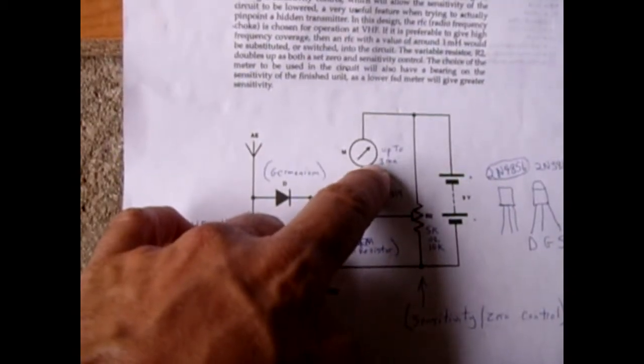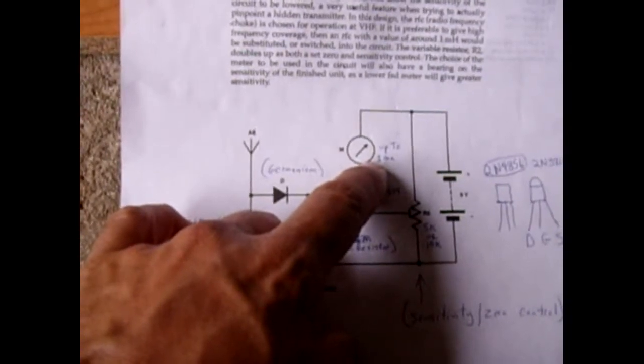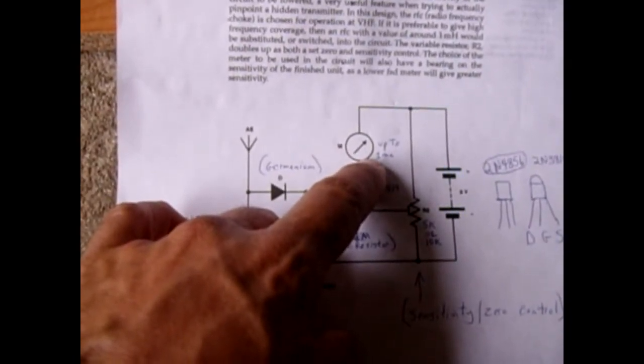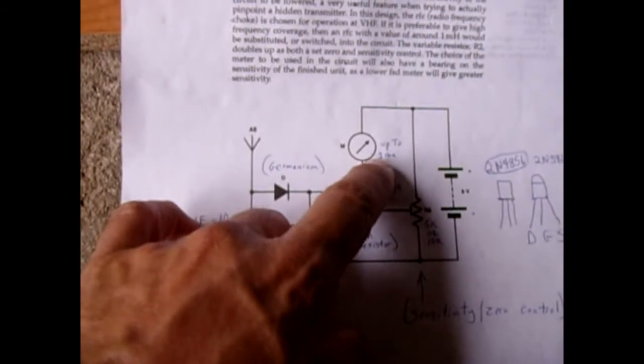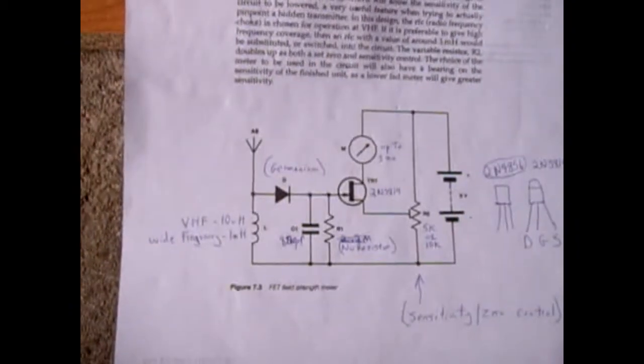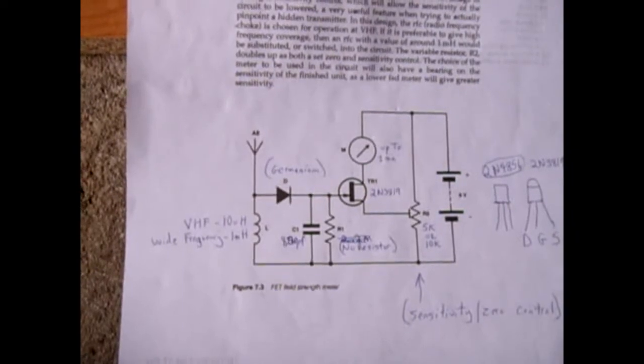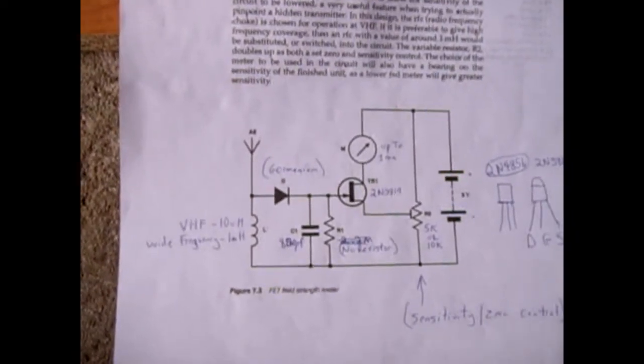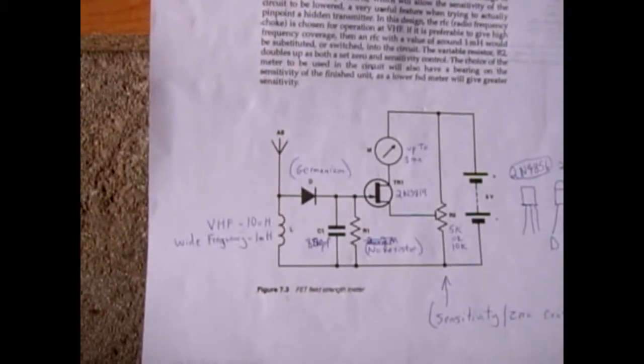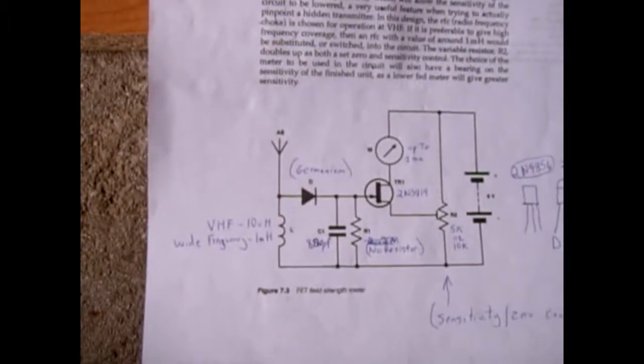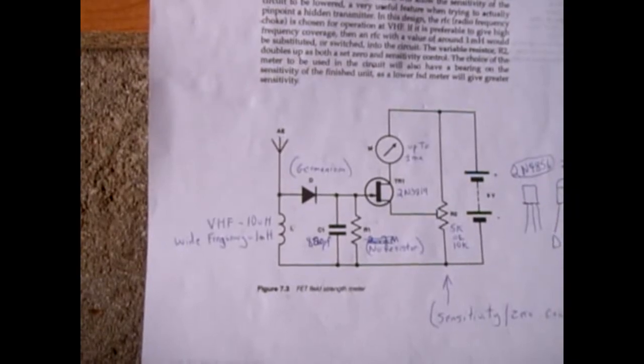Now ideally you want to use a 100 microamp and that will give you the best sensitivity up to a few feet away at least to detect. If you use what I have, a 3 to 400 microamp all the way up to a 1 milliamp you could still detect but the circuit will appear to be less sensitive because of the higher range meter. So you want to try and stay with a 100 microamp.